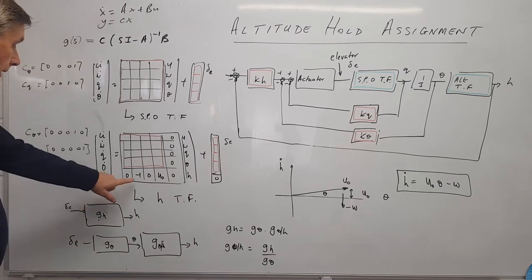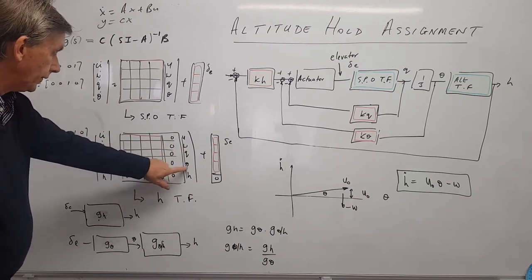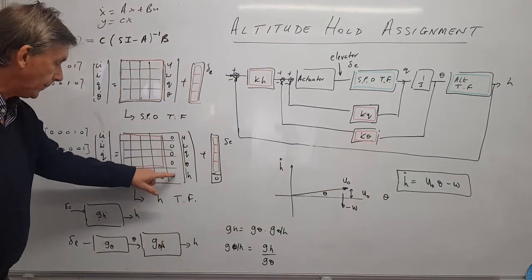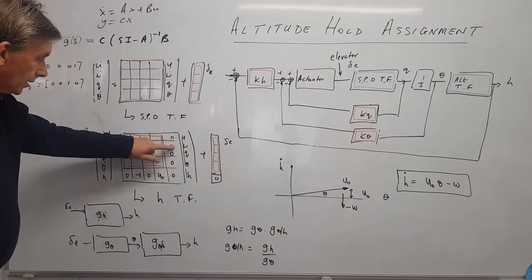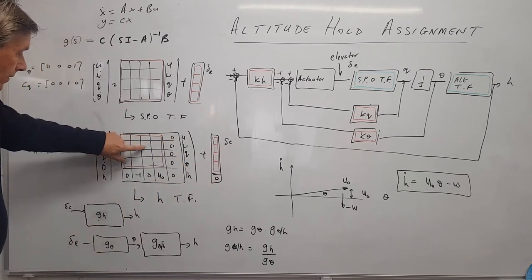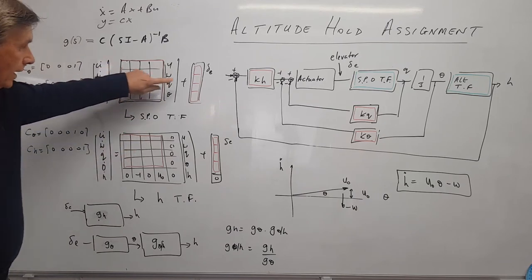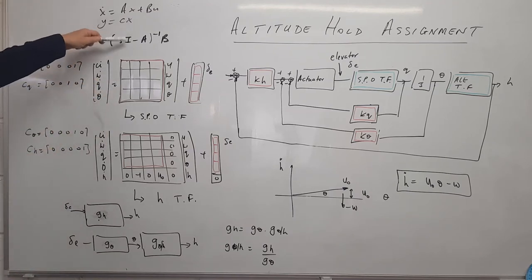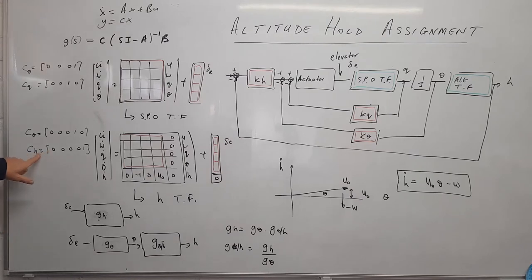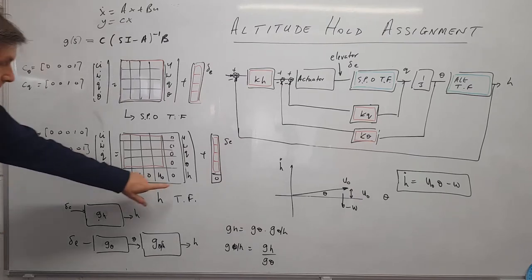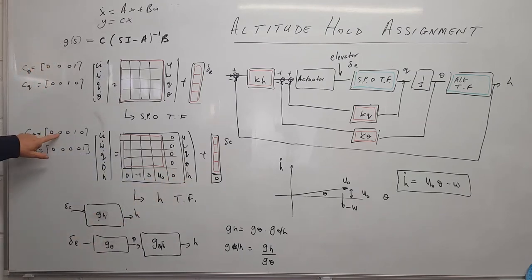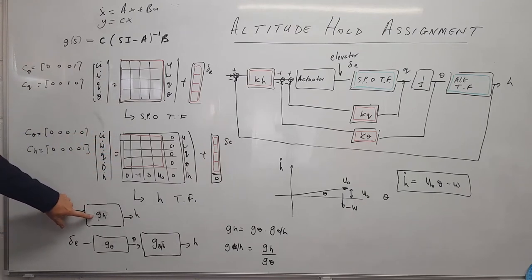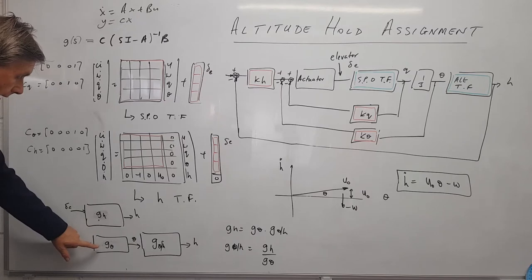So h_dot equals minus w plus u_naught theta — u_naught theta is the component going up, and minus w because w is measured in the negative direction. This gives us an extra equation which we can add to form a five-by-five state space model with h as the new state. If we choose C as 00001, it picks up height; 00010 picks up theta.